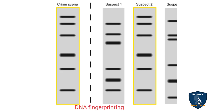DNA fingerprinting deals with crime — you can take a printout of the DNA and identify suspects one, two, or three to determine which organism or individual is involved. Like in crime films, DNA fingerprinting is used to identify organisms and is also one of the key tools used to study taxonomy.